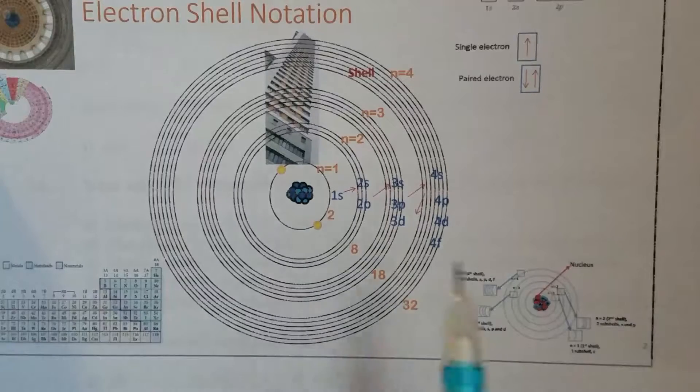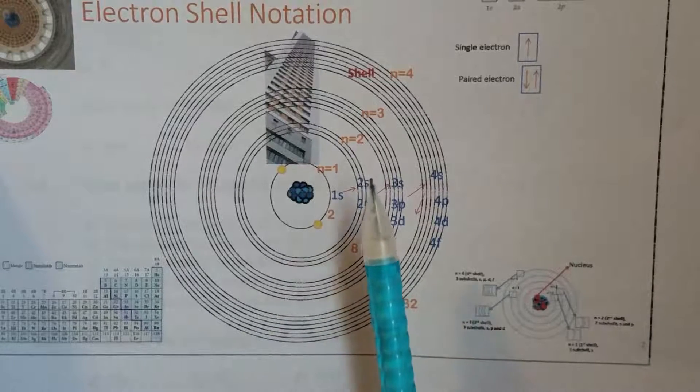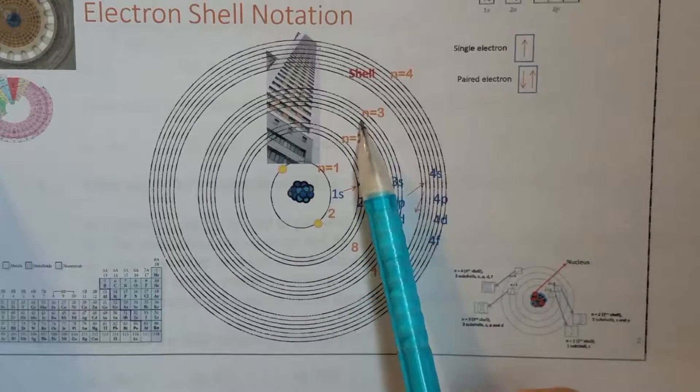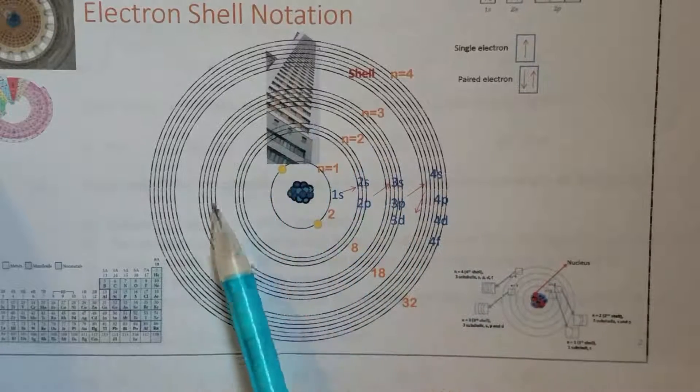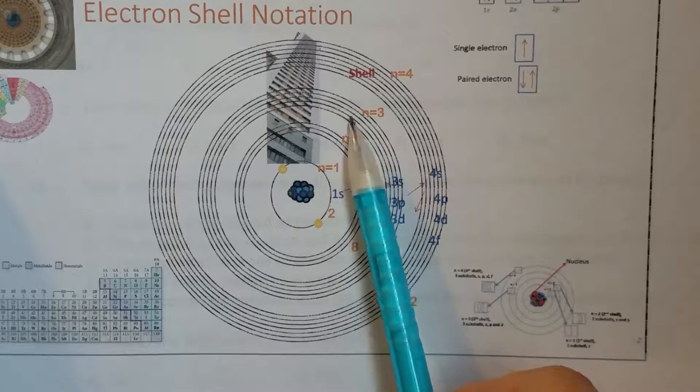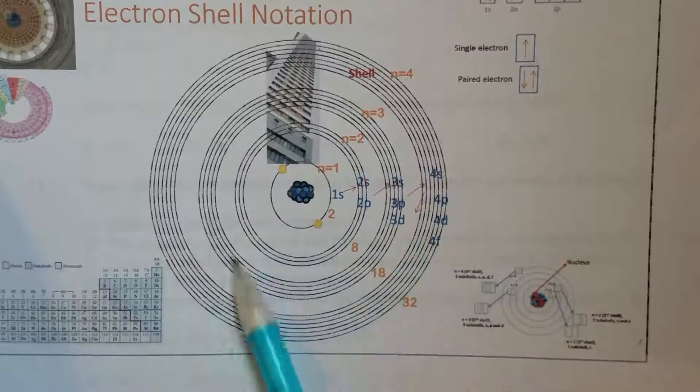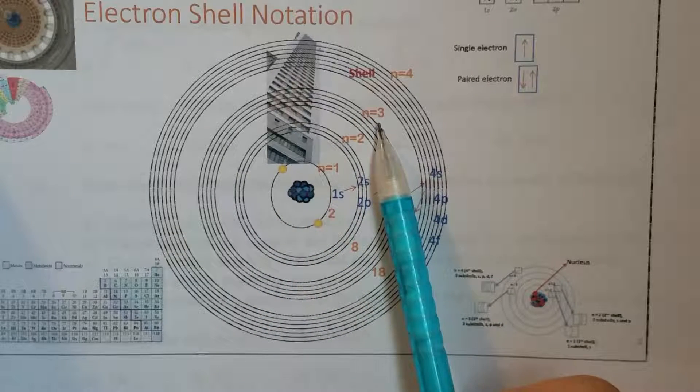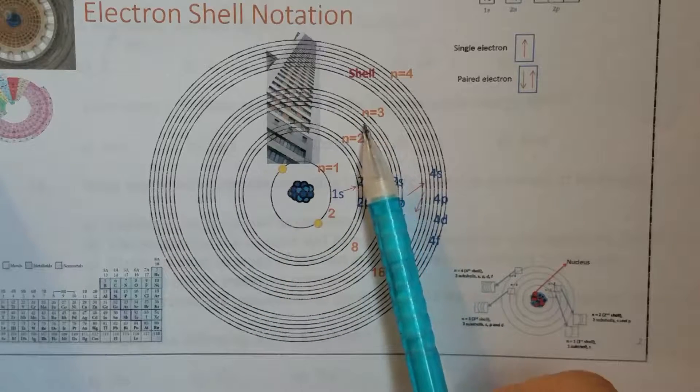The third principal energy level means n equals 3. Okay, so n equals 3. Now, if n equals 3...